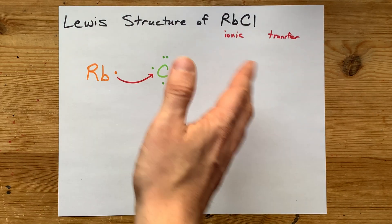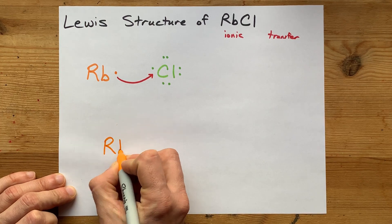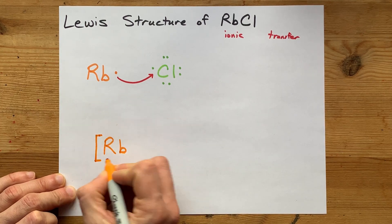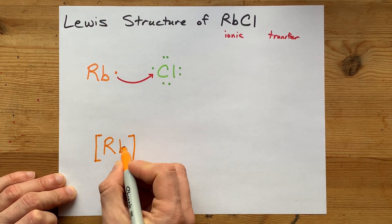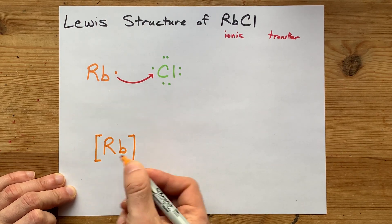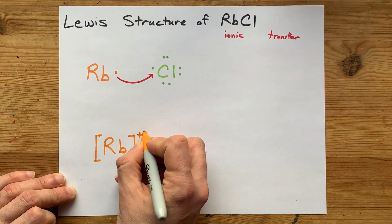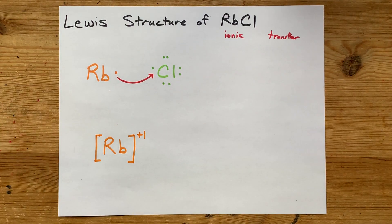But let's finish this Lewis structure off, right? You got your rubidium, but it gave away its valence electrons, so don't put any dots around it. It's now an ion, so give it square brackets. And because it lost a negative charge, it has a charge of positive one now.